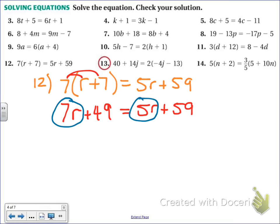And if I combine like terms on different sides, I need to do the inverse or the opposite. So if I'm moving 5r, instead of positive 5, I need to subtract 5r from both sides. And that's going to cancel the 5r on the right. On the left, 7r minus 5r is 2r. And then we write down plus 49 equals 59.